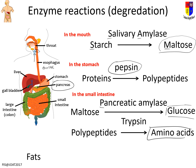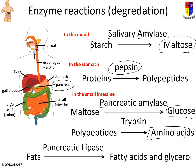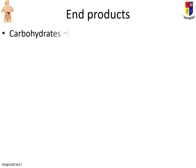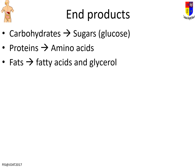Fats haven't been mentioned yet — nothing really happens to them until the small intestine. There, bile from the gallbladder plays an important role, along with pancreatic lipase, which breaks down fats into fatty acids and glycerol. So our end products are: carbohydrates → glucose, proteins → amino acids, fats → fatty acids and glycerol.